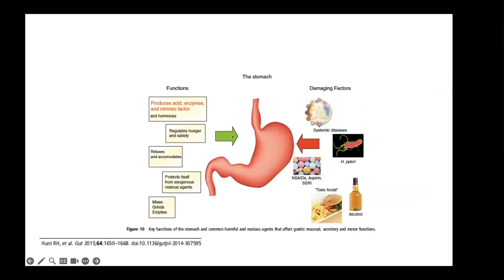Besides chemical digestion, the stomach also mechanically breaks down food and has other functions. During digestion, the top of the stomach — the fundus — relaxes so the stomach can accommodate. The antrum grinds up food and is intimately involved in regulating hunger and satiety. But the stomach is also subject to damaging factors, including systemic diseases like the one we're going to discuss, infectious agents, and toxins.